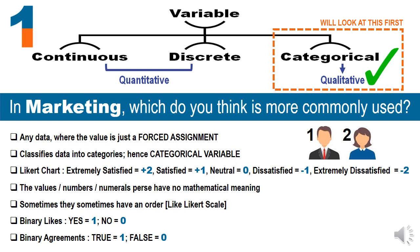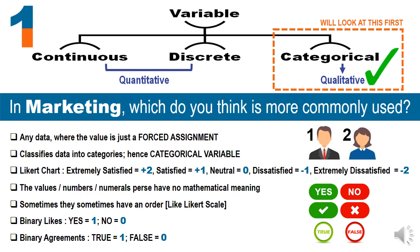Another example would be the Likert scale, where I try to divide responses and emotions into a scale of 5: extremely satisfied would be assigned plus 2, satisfied plus 1, neutral 0, dissatisfied minus 1, and extremely dissatisfied minus 2. Now these are just numbers, and you should not misconstrue 2 minus 1 as equal to 1 minus 0 — the gap between extremely satisfied to satisfied is not the same as the gap between satisfied to neutral. It is just an order.